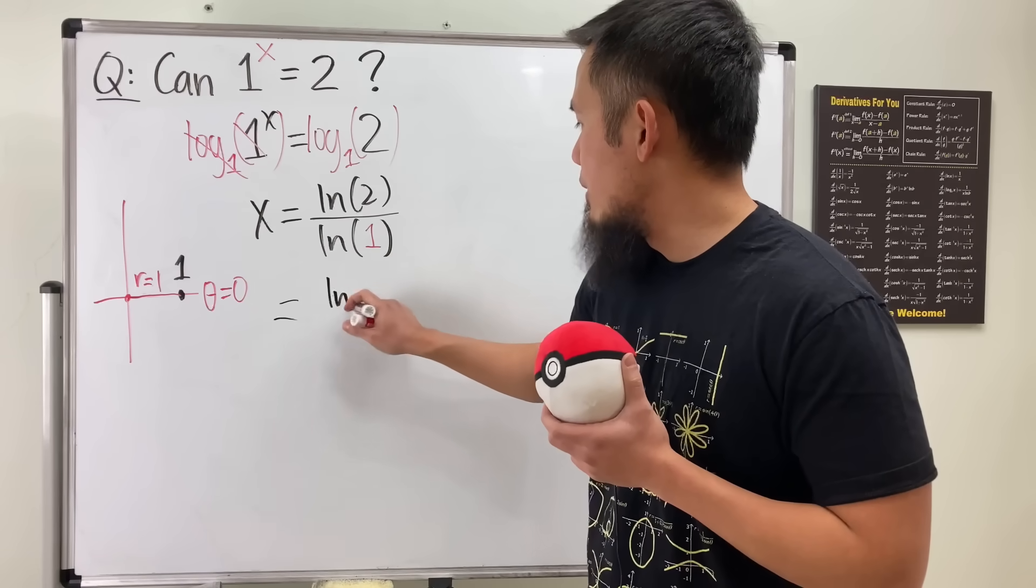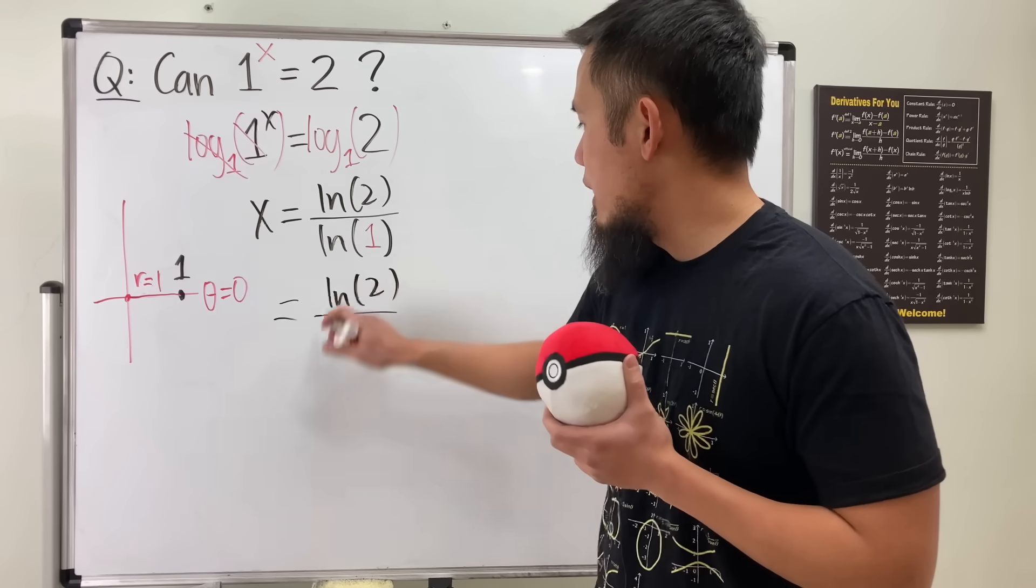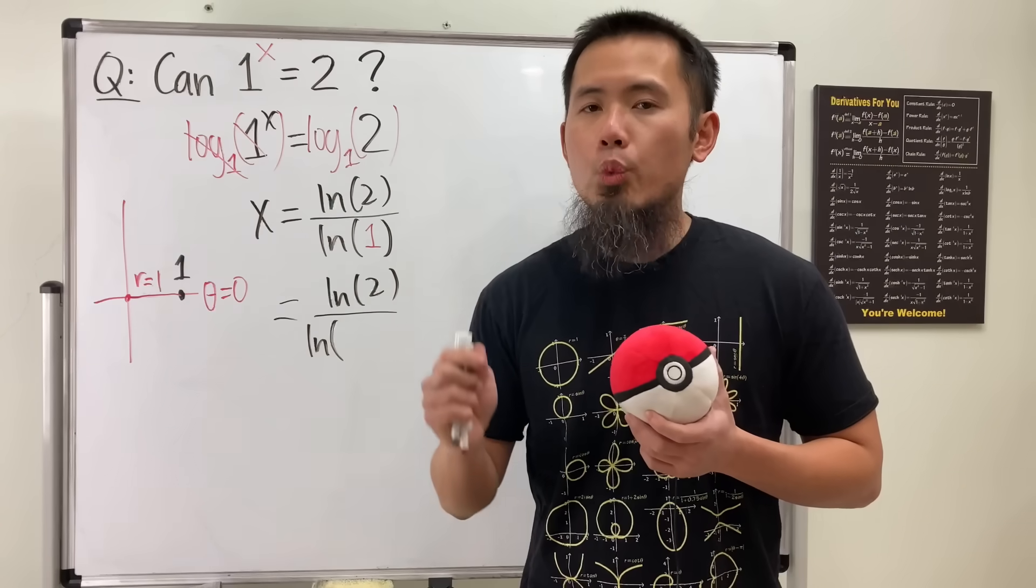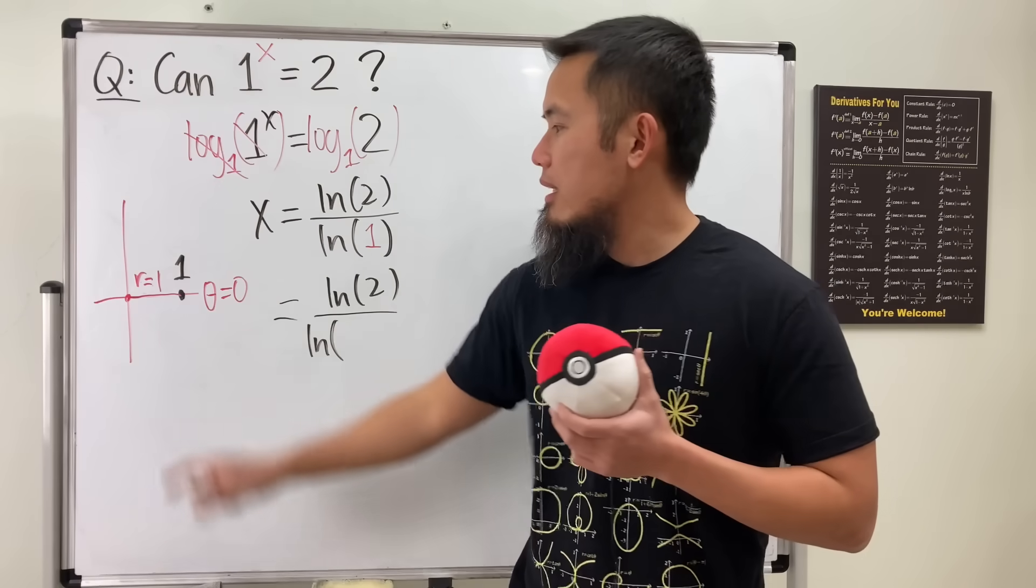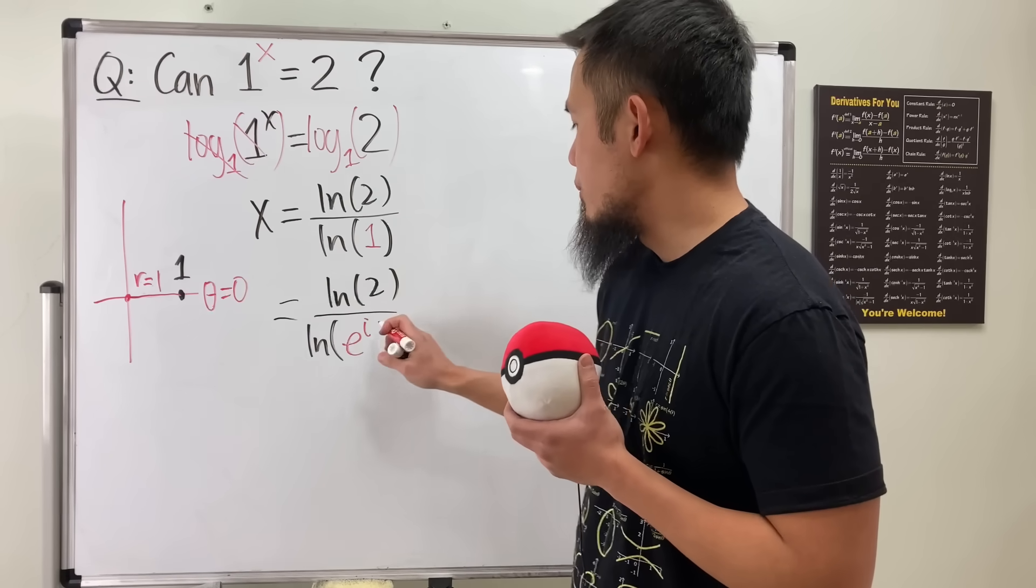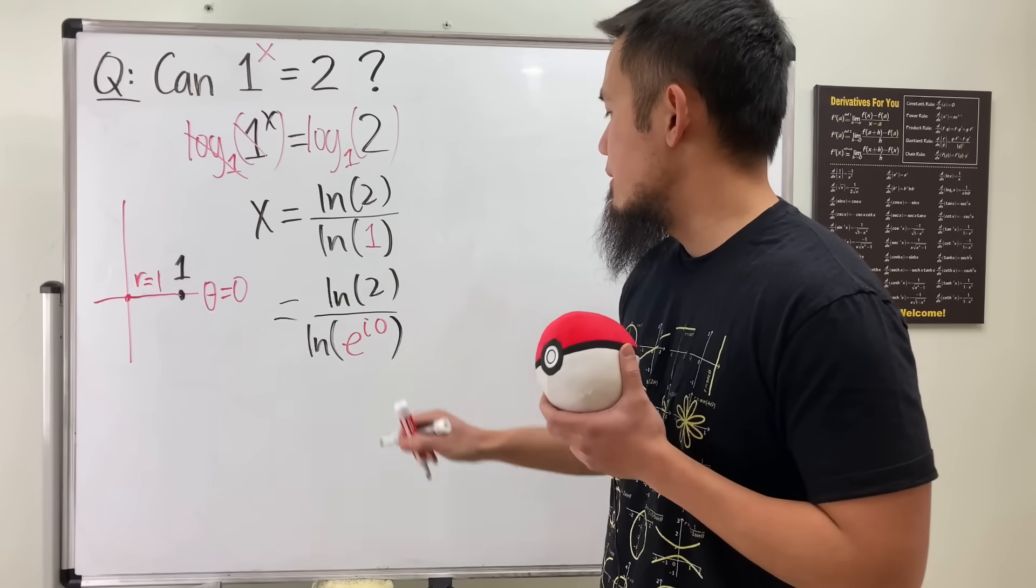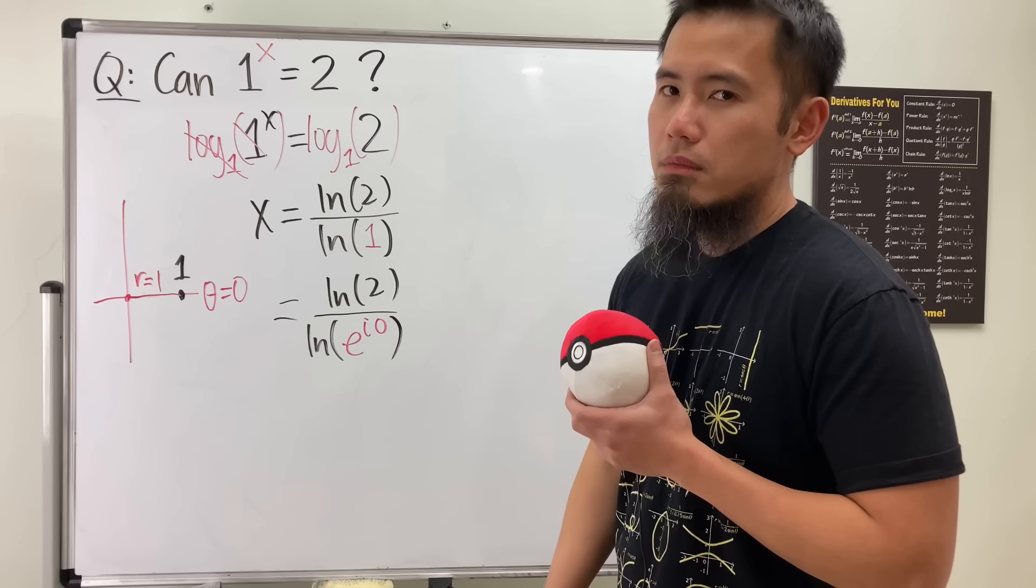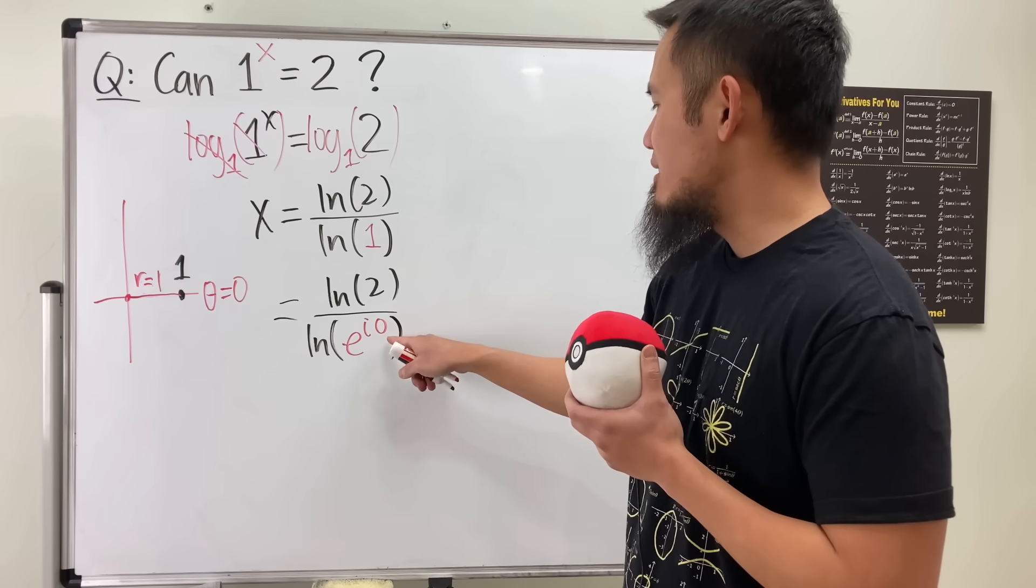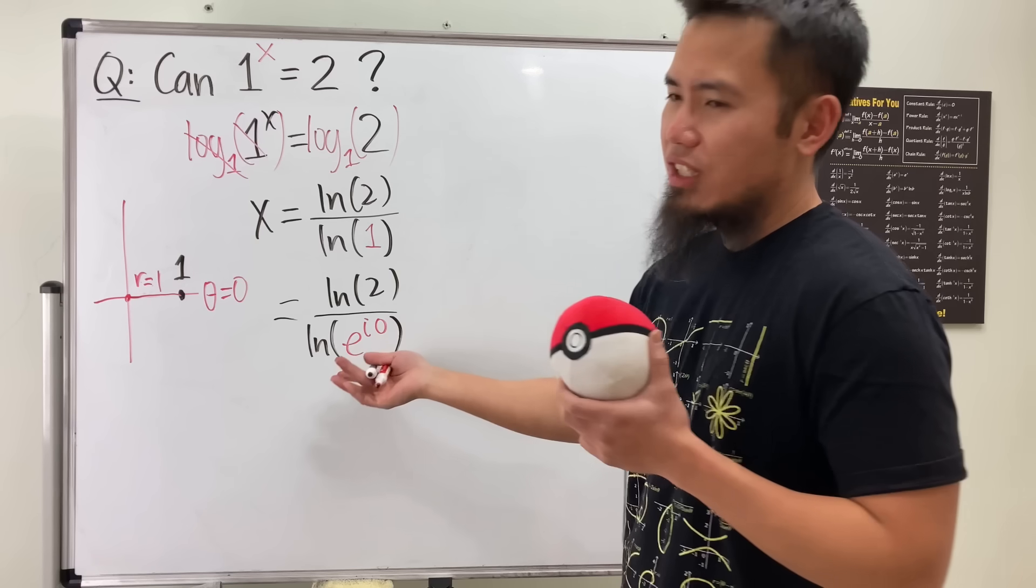Now, here we have ln 2, over here we have ln 1. Put that into its polar form. We need r·e^(i·theta). r is 1, so we just have e raised to the i and the theta is equal to 0. If I cancel the ln and e, I get i·0. I'm still dividing by 0.